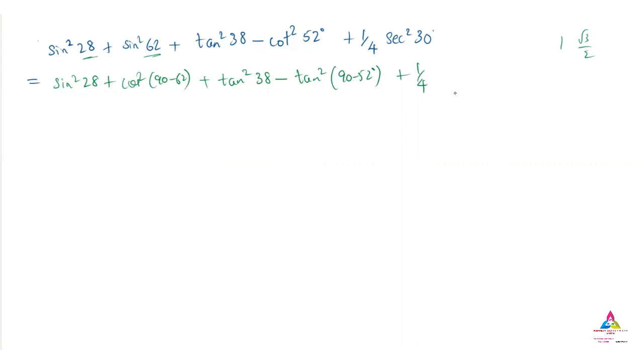So that reciprocally, cos 30 degree, the reciprocal of cos is secant. Therefore the answer will become 2 by root 3, the whole square. Secant 30 degree is nothing but 1 by cos 30 degree.